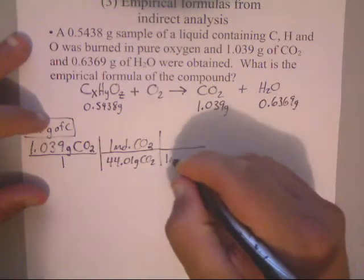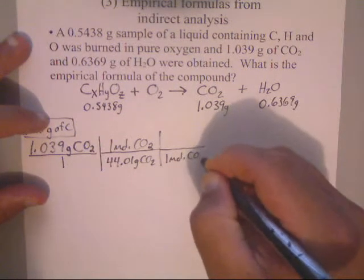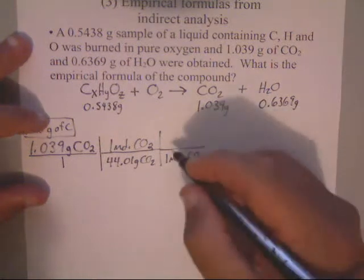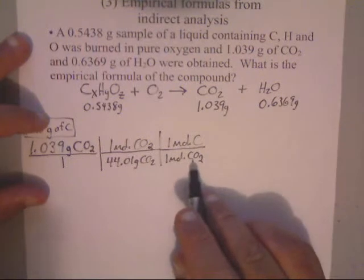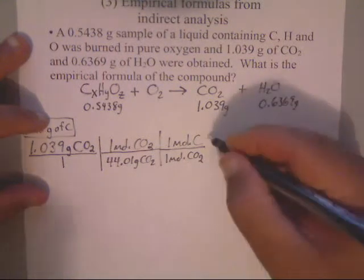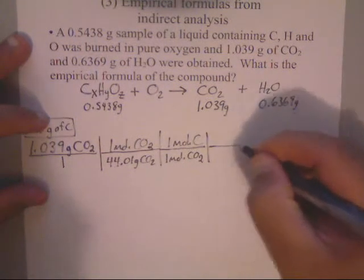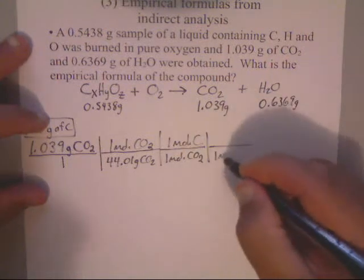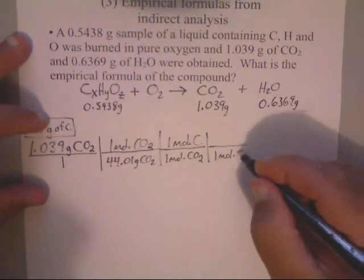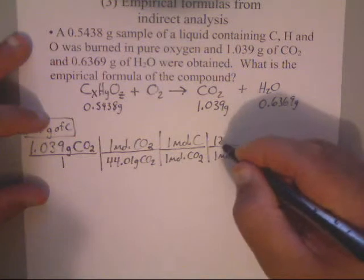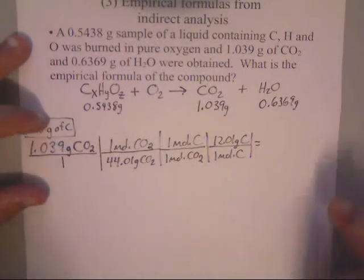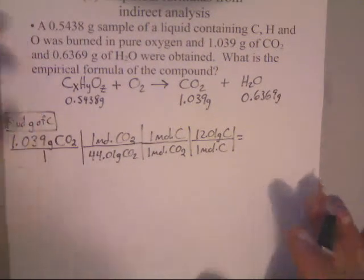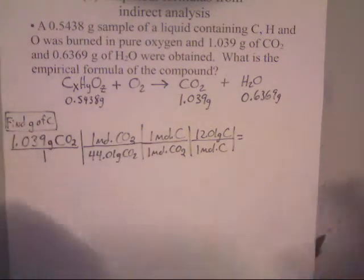I've got to find grams of carbon, so I've got to keep on going. In 1 mole of CO2, there are 1 mole of carbon because carbon only has 1 behind it. So I've got to keep going. Here, I know that in 1 mole of carbon, there is 12.01 grams of carbon. And I got that off the periodic table.